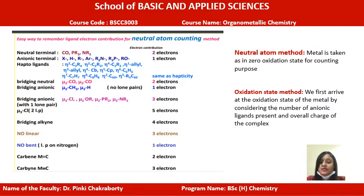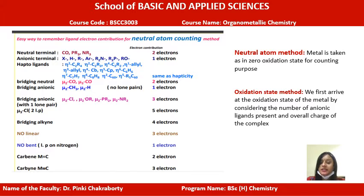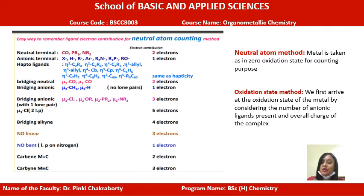There are basically two methods for calculating the 18 electron count. The most commonly used is the neutral atom method and the second is the oxidation state method. In the neutral atom method, while doing the electron counting, we first consider the metal to be in zero oxidation state — we do not consider any charge on the metal. Whereas in the oxidation state method, we always take into account the oxidation state of the metal while counting electrons.